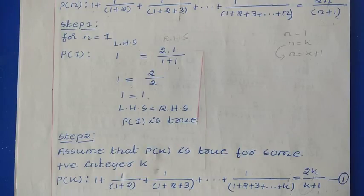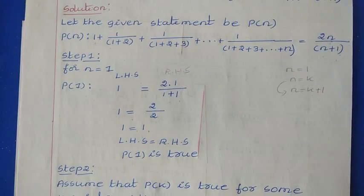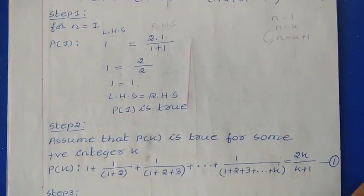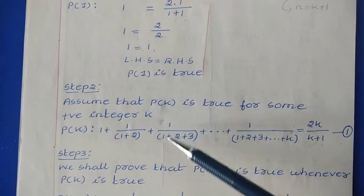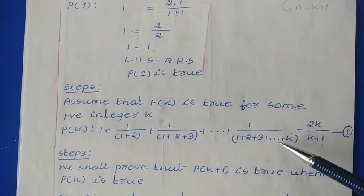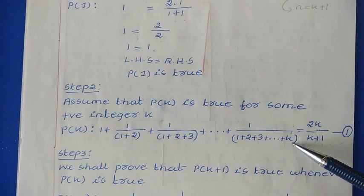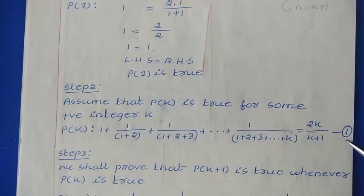In the statement P(N), wherever we have N, we replace that value with K. So for P(K), the statement becomes: 1 + 1/(1+2) + 1/(1+2+3) + ... + 1/(1+2+3+...+K) = 2K/(K+1). Let us take this as statement 1. This is our assumption.